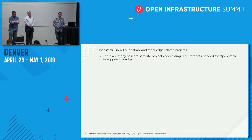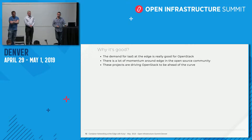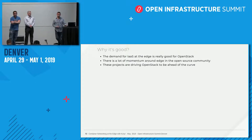The Linux Foundation and OpenStack Foundation have a bunch of projects in the works: StarlingX, Acurano, Airship, OpenNFV, LF Edge, ONAP — you've heard a thousand of them. The demand for infrastructure services at the edge is really good for OpenStack. There's lots of momentum and it's becoming a realistic thing that people need. These projects are driving OpenStack to be ahead of the curve, perhaps more than some large commercial cloud providers.